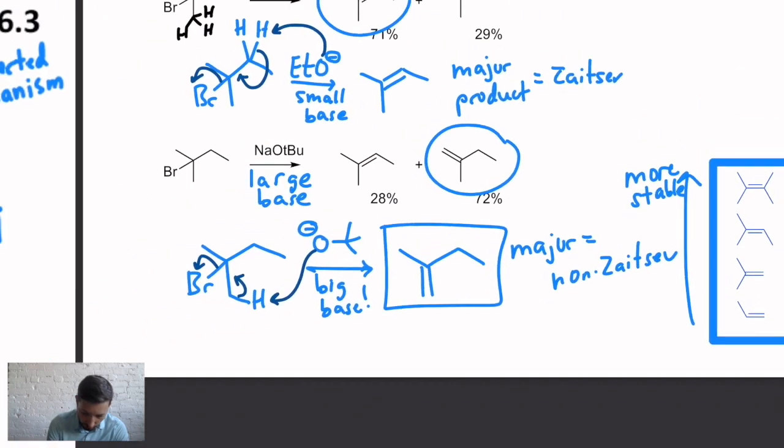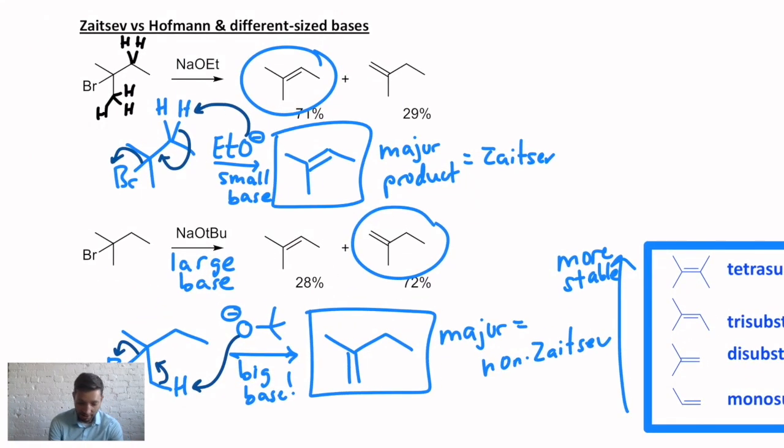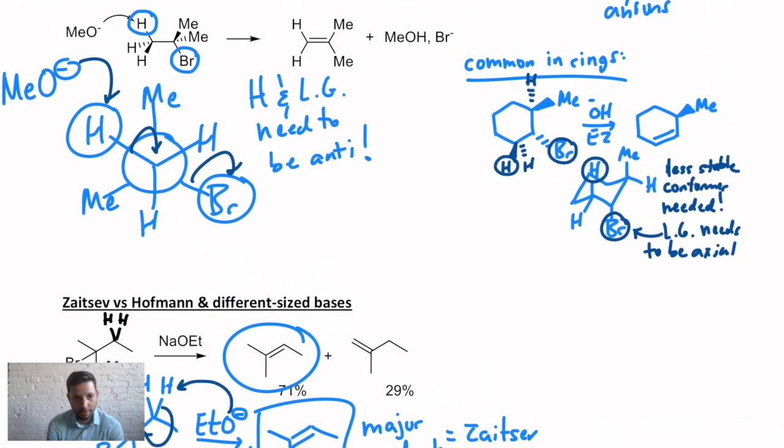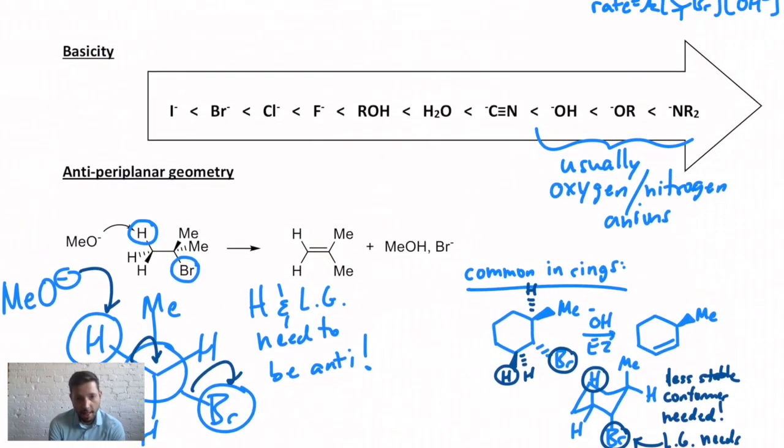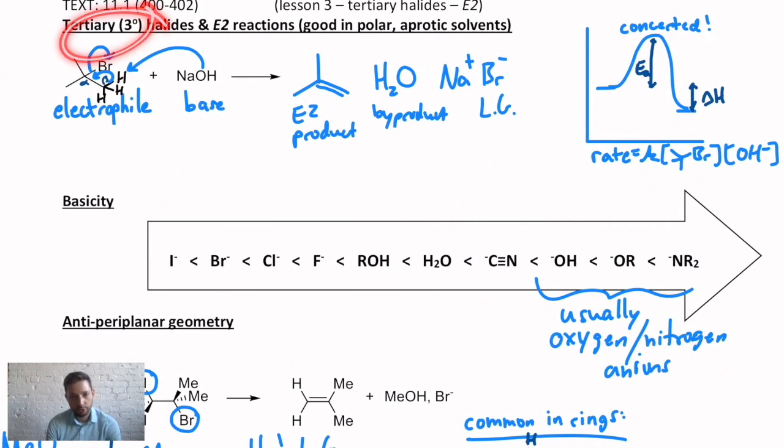So we can control which type of product we get just by the size of the base. And as long as the H and the leaving group are anti to each other, the E2 is possible. And this is primarily what you get with tertiary halides and strong bases, typically like one of those three.